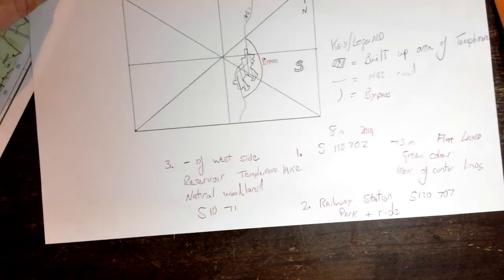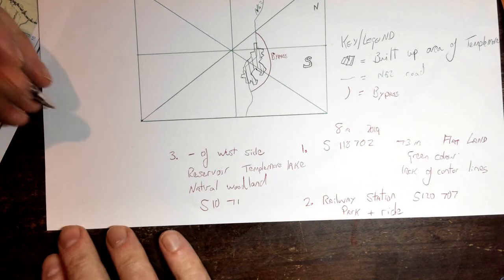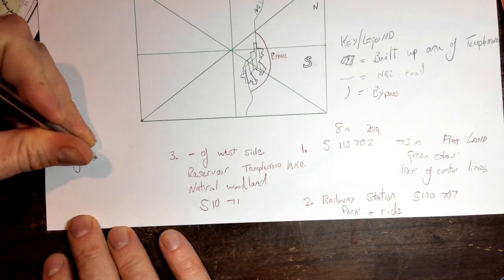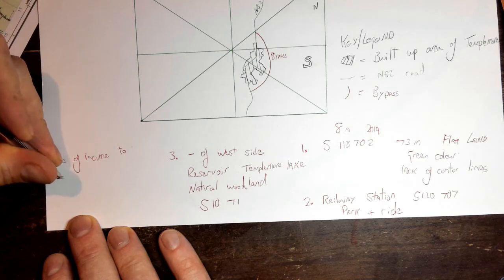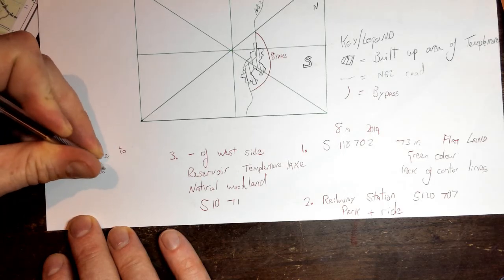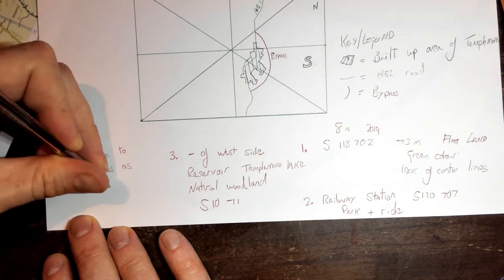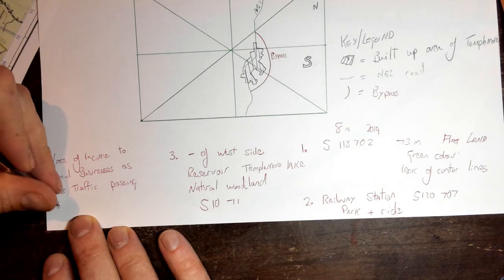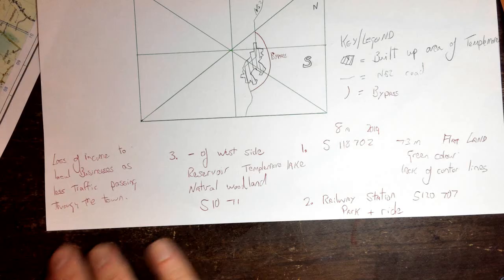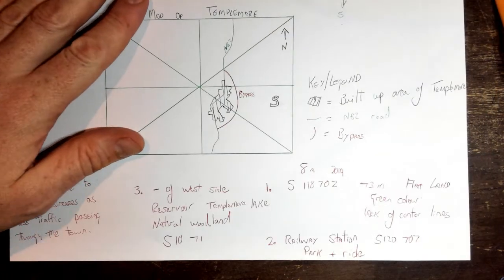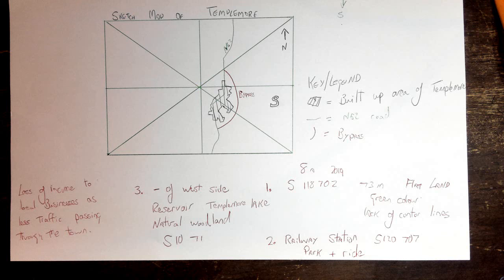The final part of the question asked about the negatives of building a bypass. The main negative is the loss of income to local shops and businesses, as less traffic passes through the town. You can expand on this by talking about how local businesses rely on passing trade to support hotels, restaurants, and the like. That was Question 8A from 2019, covering sketch maps and bypass location analysis.